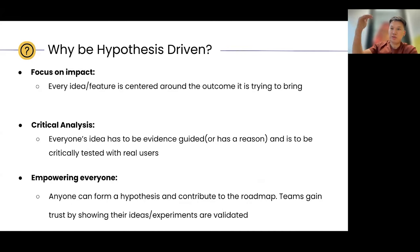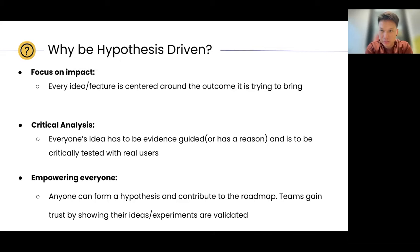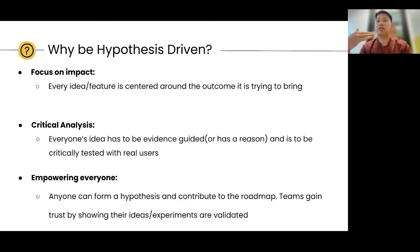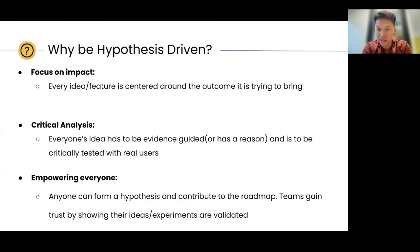From the onset, we are saying: this is the outcome we're trying to drive. So every feature, every idea is centered around the outcome it's trying to bring — there are no nice-to-have things. And the second part: everyone's idea has to be evidence-guided or has a reason. Sometimes people say 'we are hypothesis driven' and that means we always have to check quantitative numbers to back up our ideas. But as seen in the example, we did have data to show it is a problem, and we also had qualitative research that provided the evidence for the change.